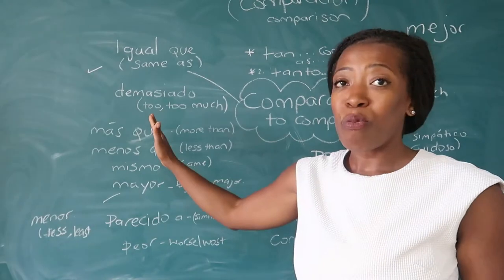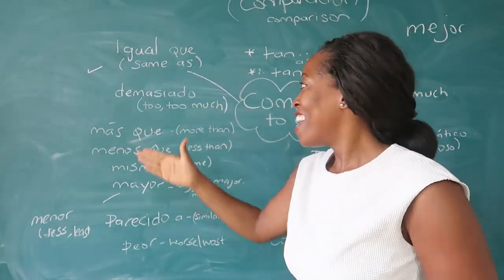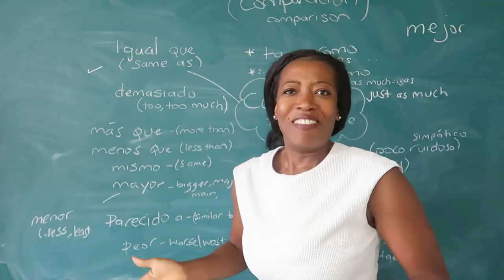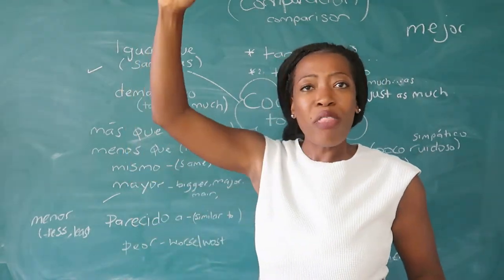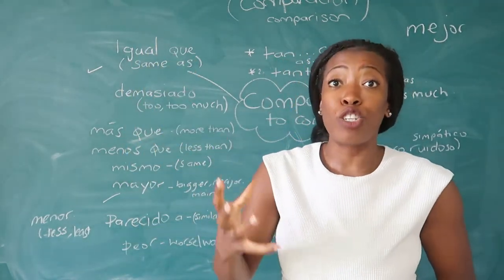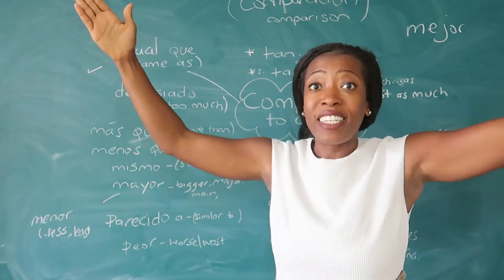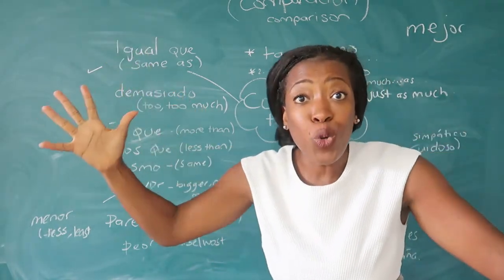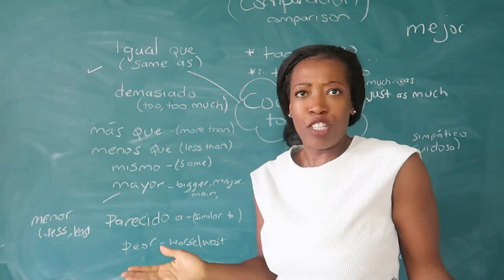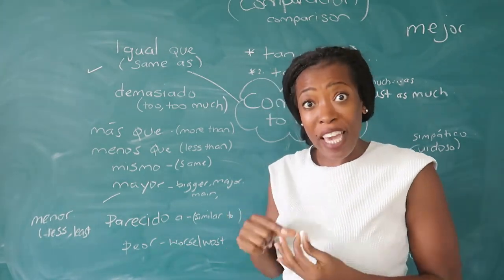Another word which you might have seen — I'm sure you've seen it everywhere — is demasiado. Es demasiado grande — it's too big. When you're saying something is too much or it's too something: es demasiado grande, it's too big; es demasiado pequeño, it's too small.